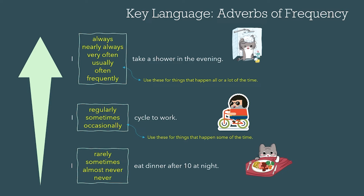Under that we have: regularly, sometimes, and occasionally — use these for things that happen some of the time. And at the very bottom: rarely, almost never, and never. Use these for things that happen very few times, or not at all.